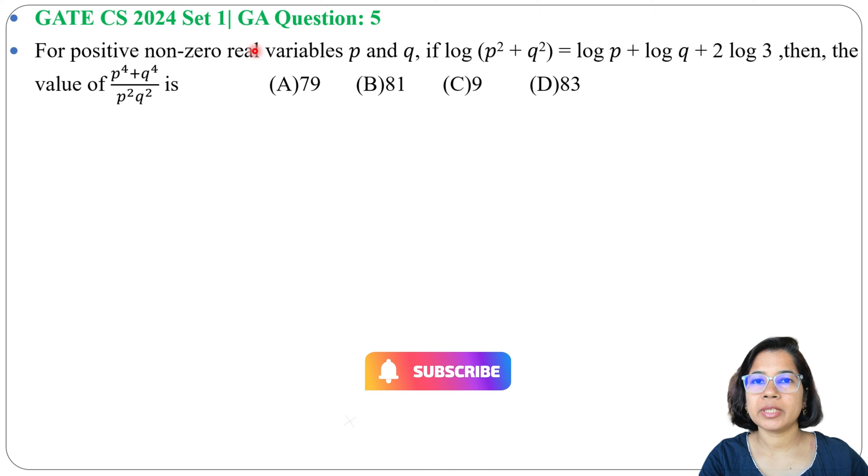Let's solve one previous question of general aptitude. This question was asked in GATE CH 2024 Set 1. For positive non-zero real variables p and q, if log(p² + q²) = log p + log q + 2 log 3, then the value of (p⁴ + q⁴)/(p²q²) is, and four options are given.